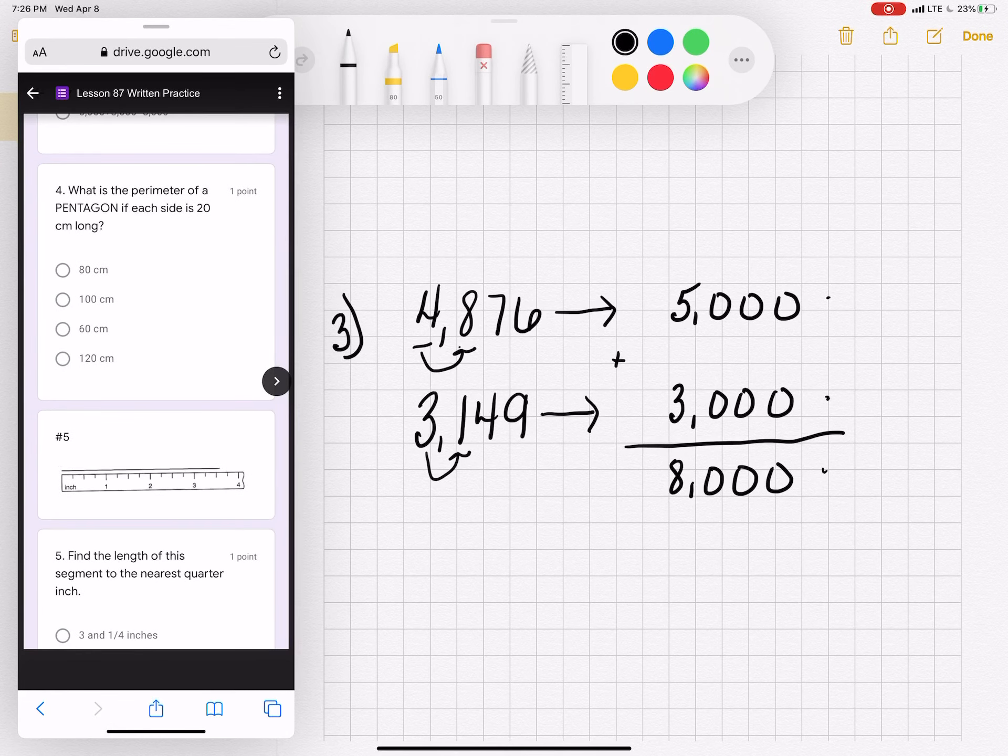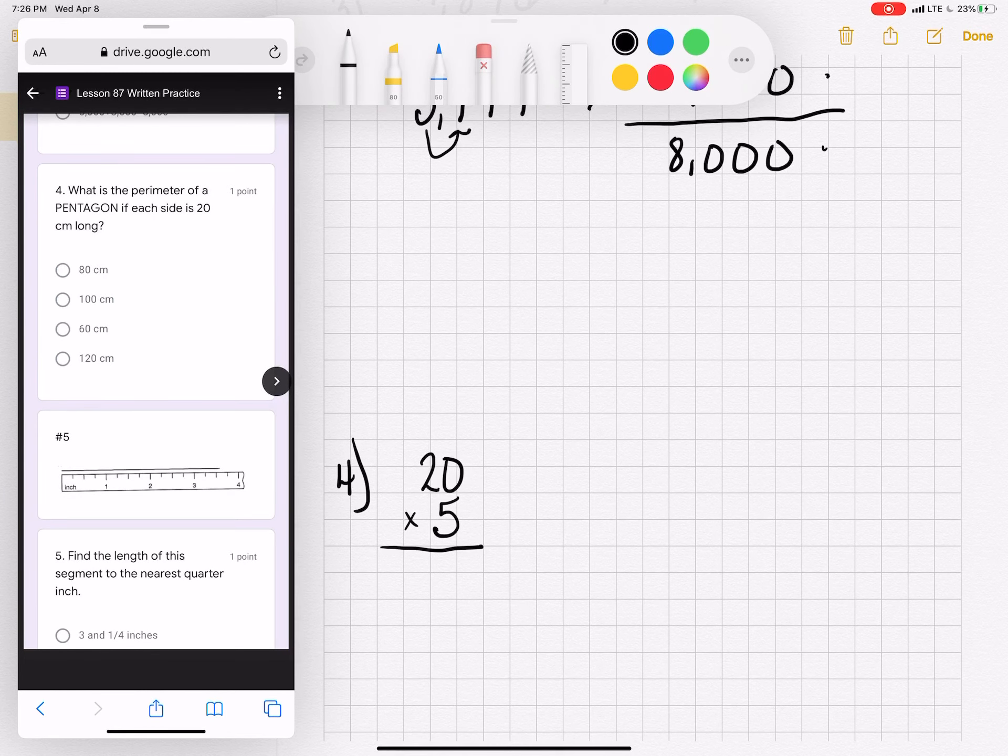Number 4. What is the perimeter of a pentagon? Remember, a pentagon has 5 sides if each side is 20 centimeters long. So I have 20 centimeters times 5 sides. And 5 times 0 is 0. 2 times 5 is 10. And I got 100 centimeters on number 4.